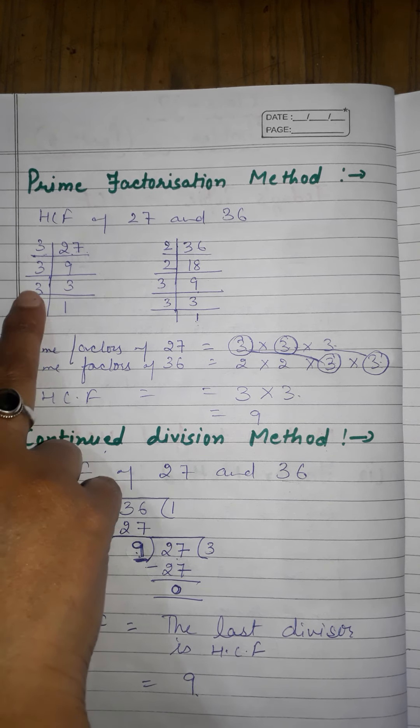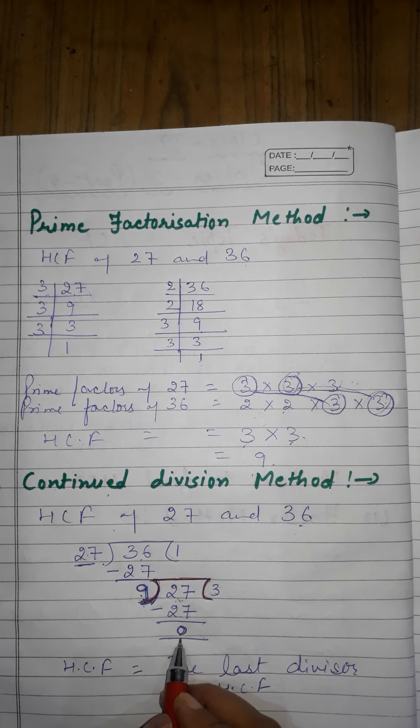The number to divide next (the dividend) will be the previous divisor. So now 27 is brought inside as the dividend. 9 × 3 = 27, so the remainder is zero. The process is complete when we get zero. If zero had not come, we would have continued by making the remainder the new divisor.